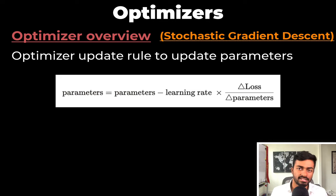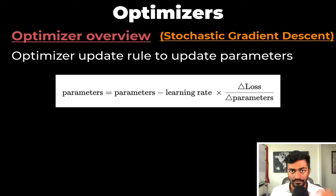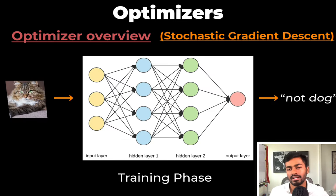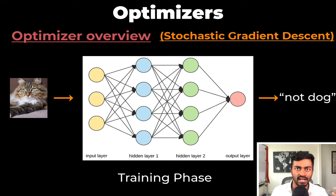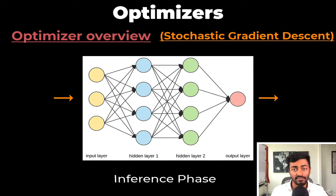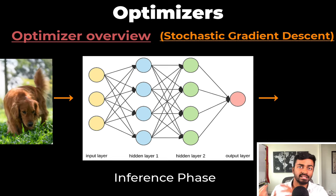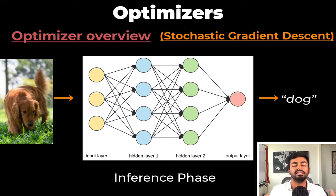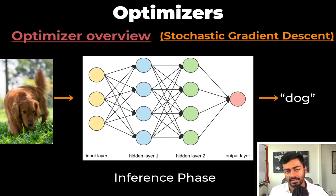We use the gradients computed in the optimization algorithm. In the case of stochastic gradient descent, we update each weight parameter using this formula. This here is one iteration of weight updates and we repeat the process hundreds or thousands of times during the entirety of the training process. Then during the inference phase we pass an unseen image to the network and ideally it will be able to make the correct prediction of whether it is a dog or not a dog.